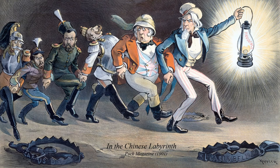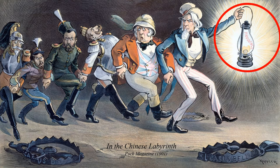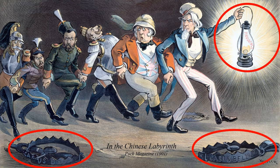Cartoonists often exaggerate the size of people and objects to help make a point. This cartoon focuses on the risks being taken by the major powers as they struggle to gain a foothold in China. Uncle Sam is carrying an oversized lantern labelled Prudence. On either side of the group are oversized spring traps labelled Casus Belli, which is a Latin expression for an act or situation that can provoke war.